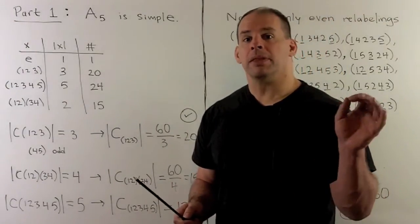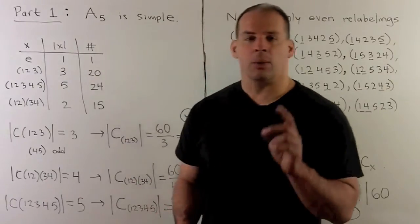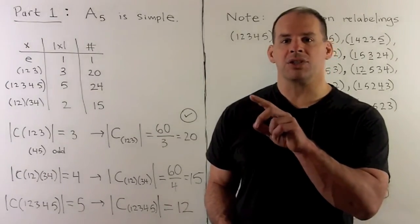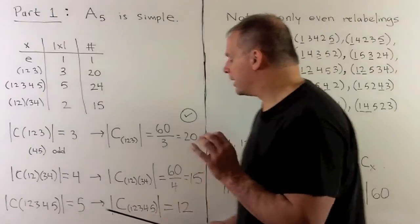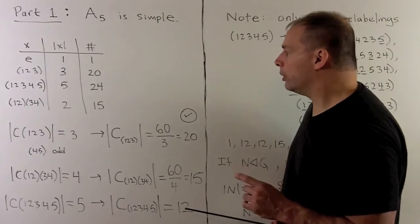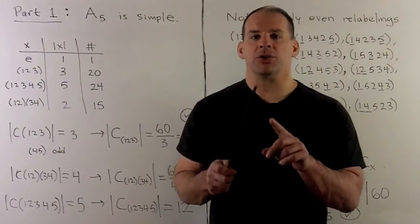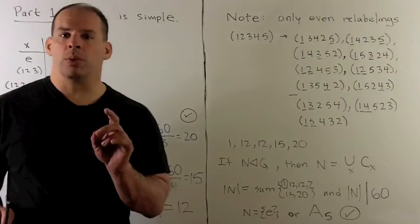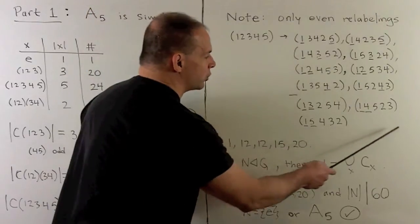For a five-cycle, things are different. The centralizer of (1 2 3 4 5) contains the identity, the element itself, and all powers — just a subgroup isomorphic to Z mod 5. So the order of the class is 60 divided by 5, which gives 12. This is not going to be everything — the five-cycles break into two classes when we go from S5 to A5. If we want to compute the elements in the class of (1 2 3 4 5), we expect 12 to come out.